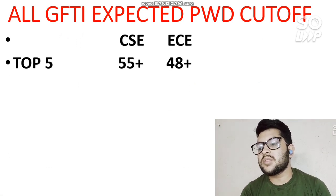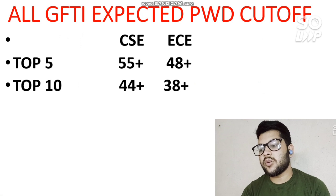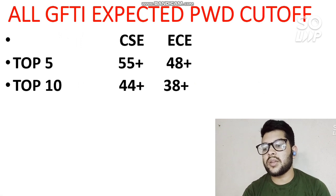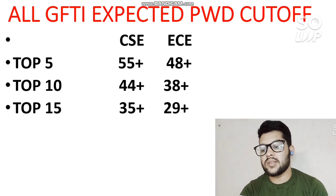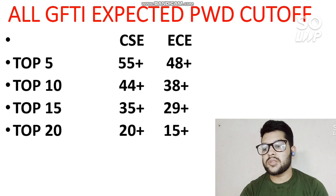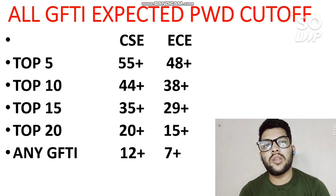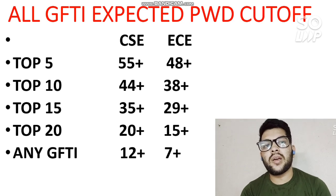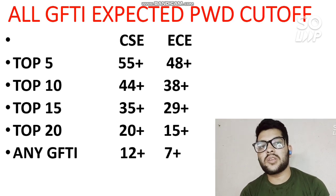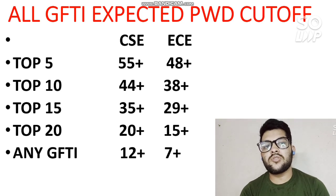For top 5 GFTIs: CS requires at least 55 percentile and EC requires 48+ percentile. For top 10 GFTIs: CS requires 44+ percentile and EC requires 38+ percentile. For top 15: CS requires 35+ percentile and EC requires 29+ percentile. For top 20: CS requires 20 percentile and EC requires 15 percentile. For any GFTI, you can get CS at 12+ percentile and EC at 7+ percentile, but only with better counseling.